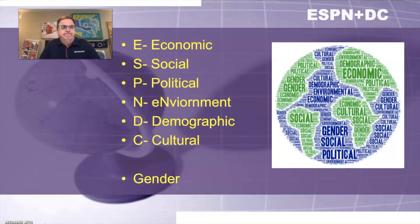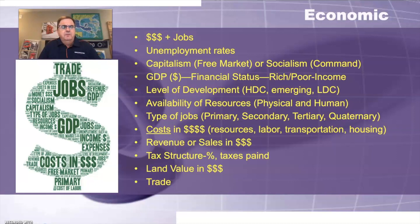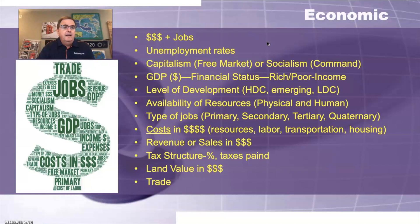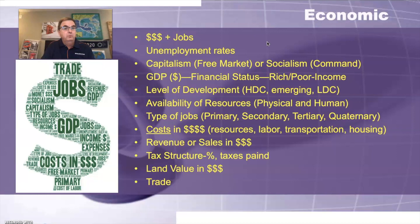Let's talk about economics first. The key to answering something with economics — if a question asks you to describe an economic impact — you want to be talking about dollars and jobs. You're really safe if there's a cost, unemployment, or a type of job mentioned. You can talk about capitalism, economic systems, free market, socialism, or command economy. Do not talk about democracy — that's not economic, it's a political system. Our economic system is a mixed economy or free market. GDP per capita — gross domestic product — is the value of all goods and services produced within a country. It's a measurement of productivity. You can also talk about financial status, rich, poor, stocks, income — these are all economic things.